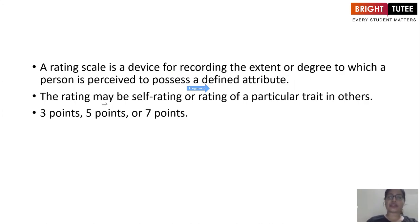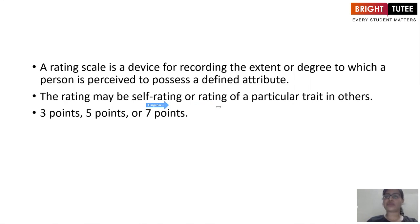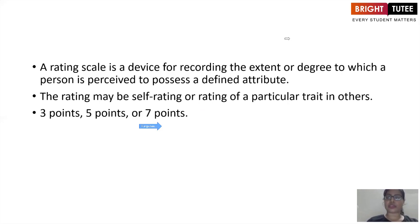This rating may be done as self-rating, where you rate yourself, or somebody else rates your traits for you — assessing whether you are a lonely person or a very sociable person. This rating may be done on various points: it could be three points, five points, or even seven points.